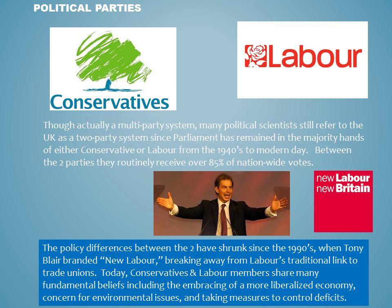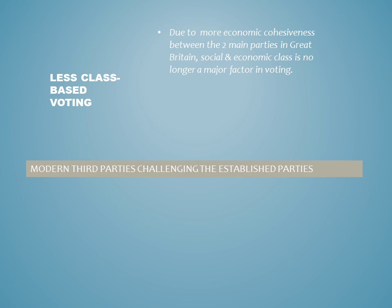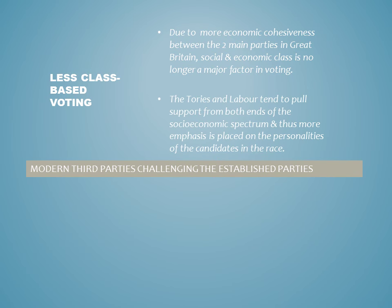Unlike in the United States, where the Republican and Democratic parties have become more and more polarized from each other, the Conservatives and Labour Party have come together to share a similar philosophy on issues of the economy, the environment, and trying to control budget deficits through austerity measures. Thus, today, elections place more emphasis on the personality of the candidate rather than ideological differences between the two mainstream parties. The greatest outcome of this convergence is that there is far less class-based voting than there used to be. Because the Tories and Labour today have pull support from both ends of the spectrum, the personality of the candidates running is much more of a large determiner on which party is going to take over the House of Commons.